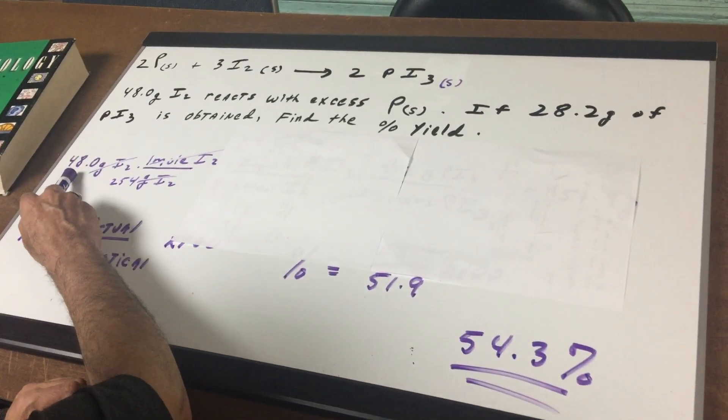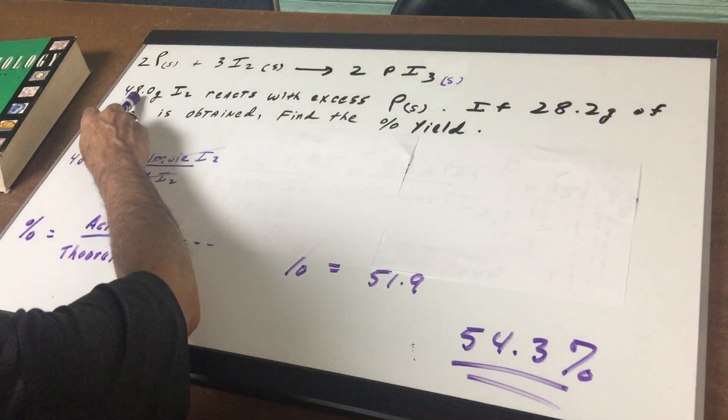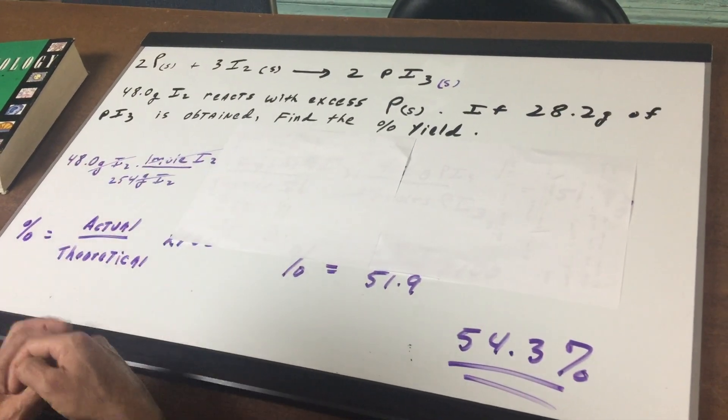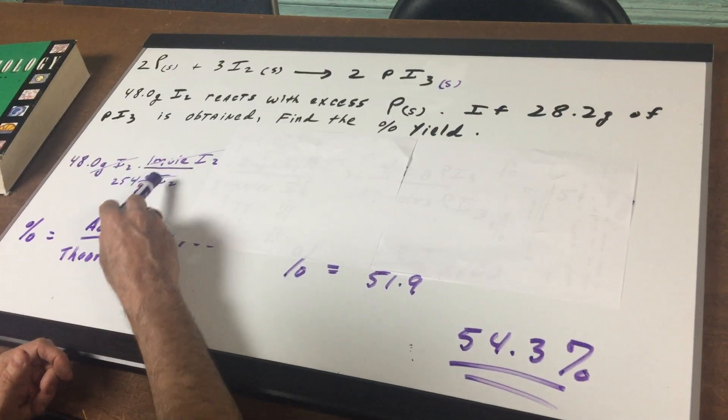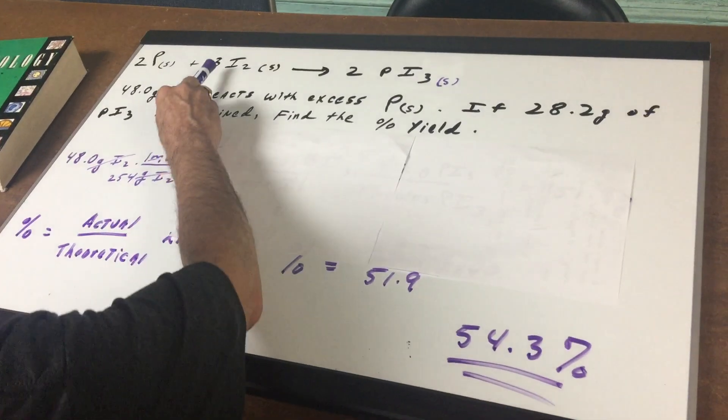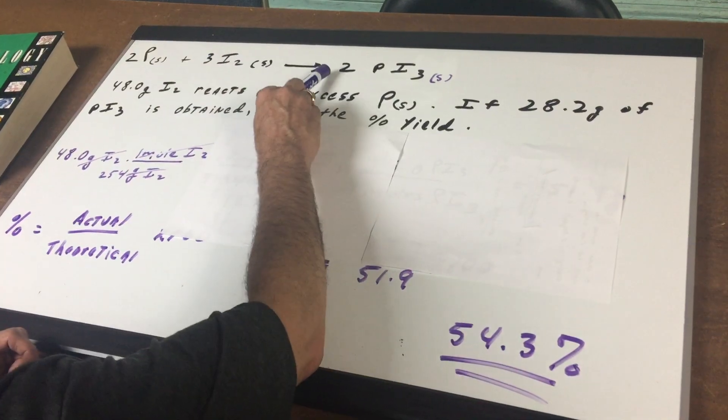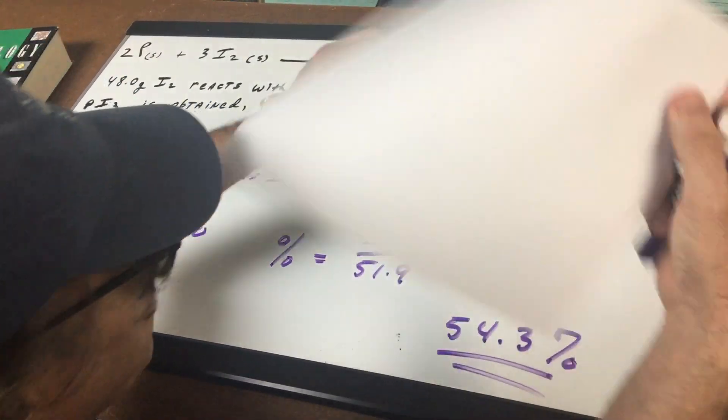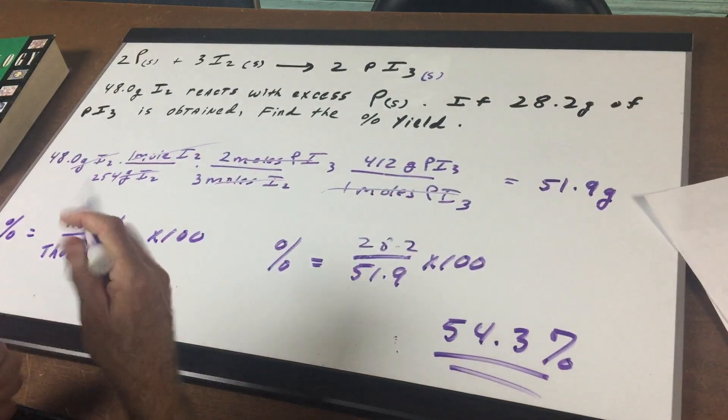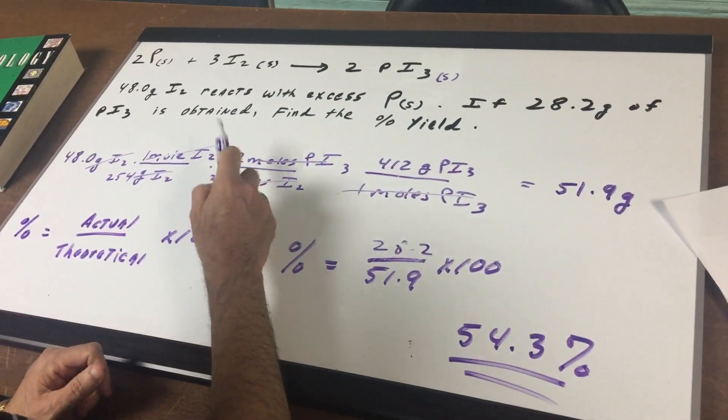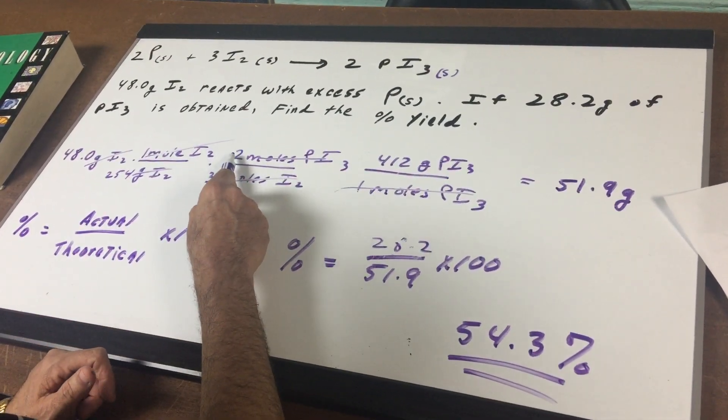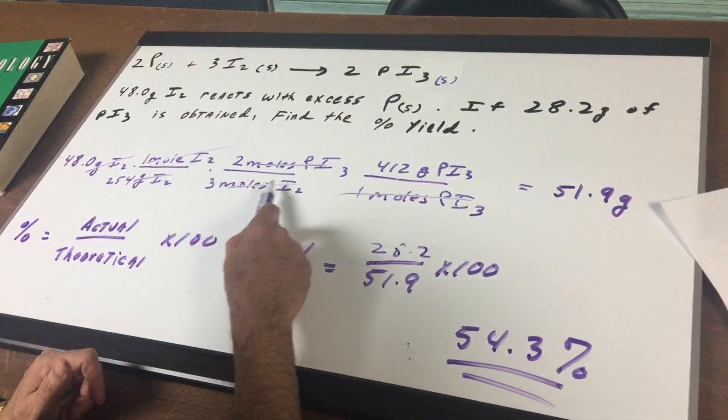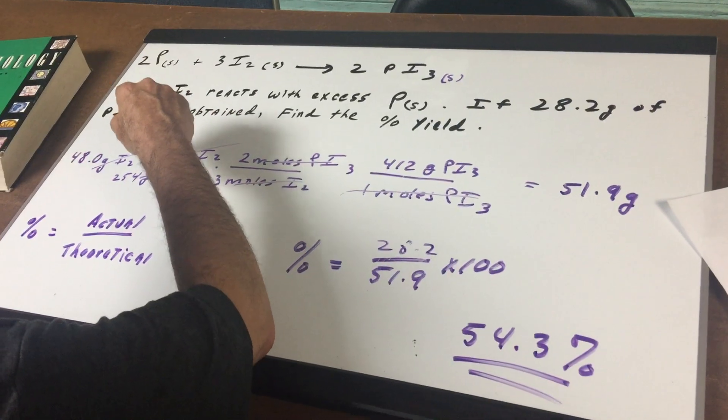So the first thing I did is I started off with my given. We have 48 grams of iodine and I converted to moles. Now that I got into moles of iodine, as you can see there's three moles of iodine for every two moles of PI₃. So let me take this away and you can see you write down the conversion factor. There's two moles of PI₃ for every three moles of iodine. This is why it's important to have the equation balanced.